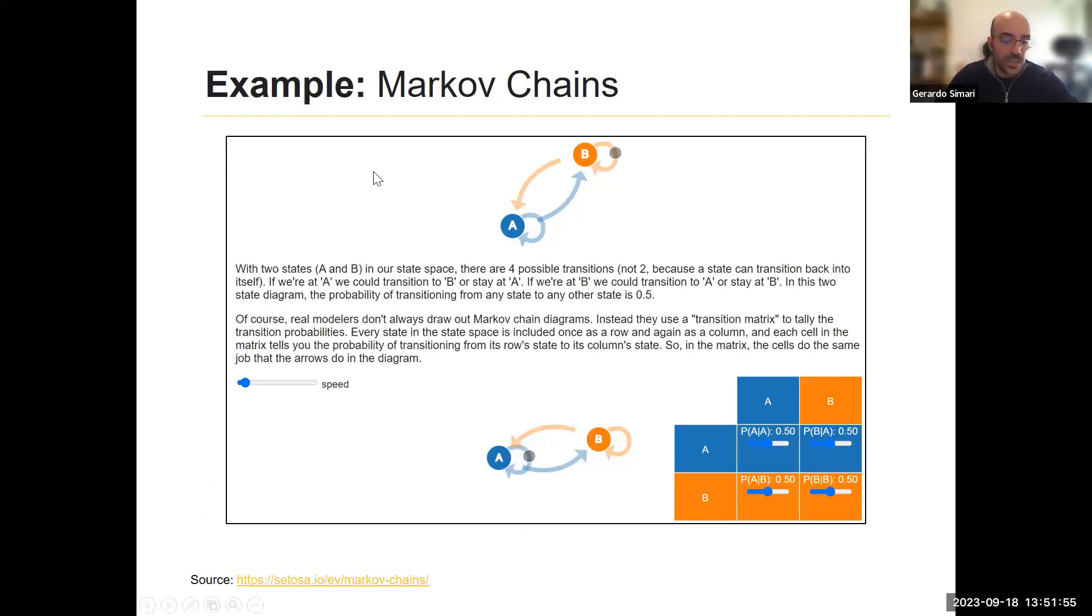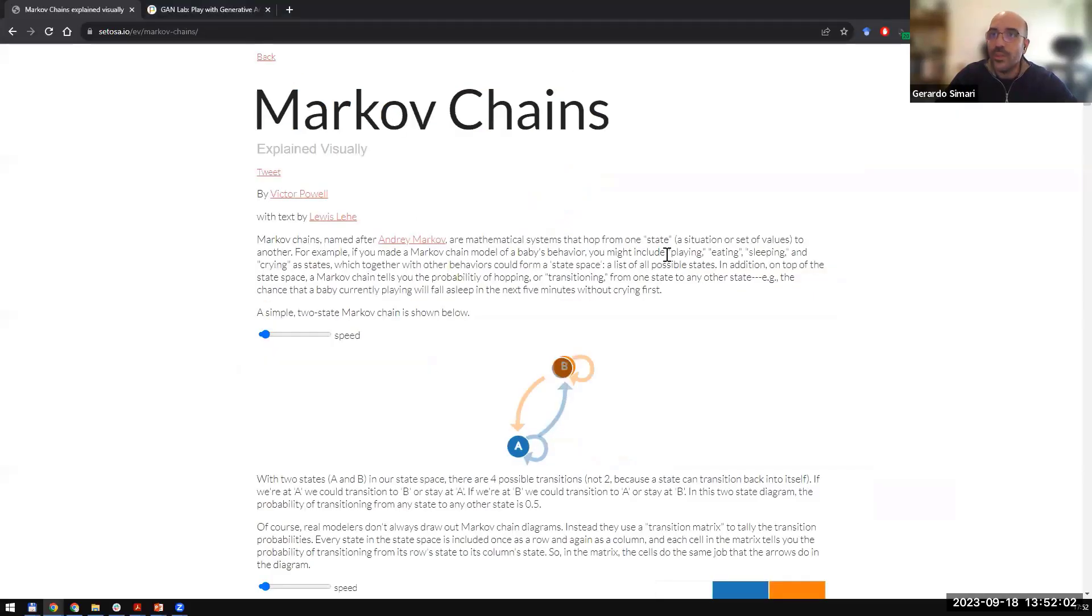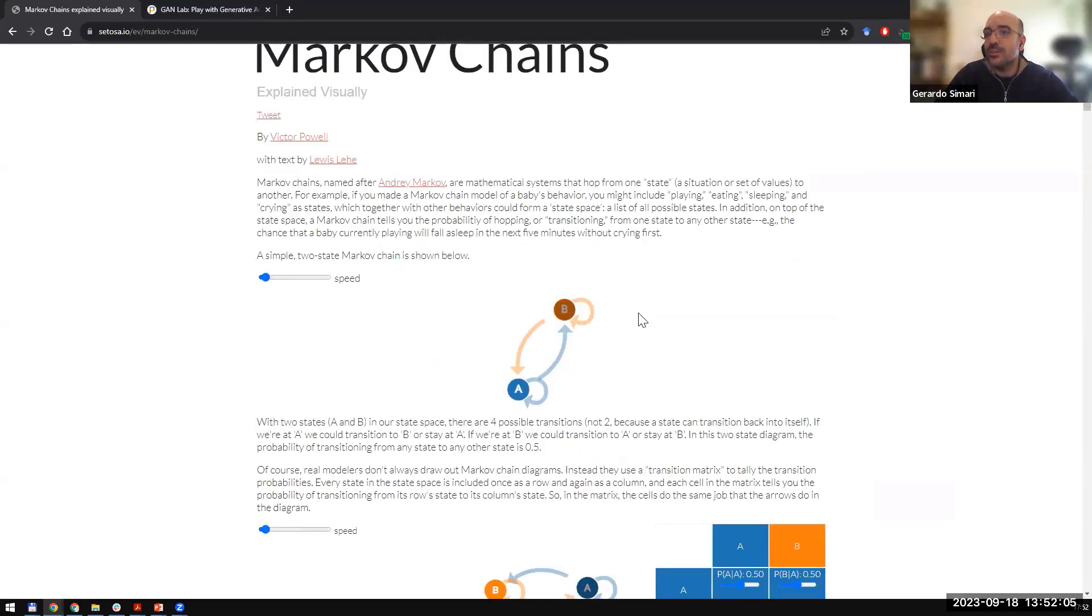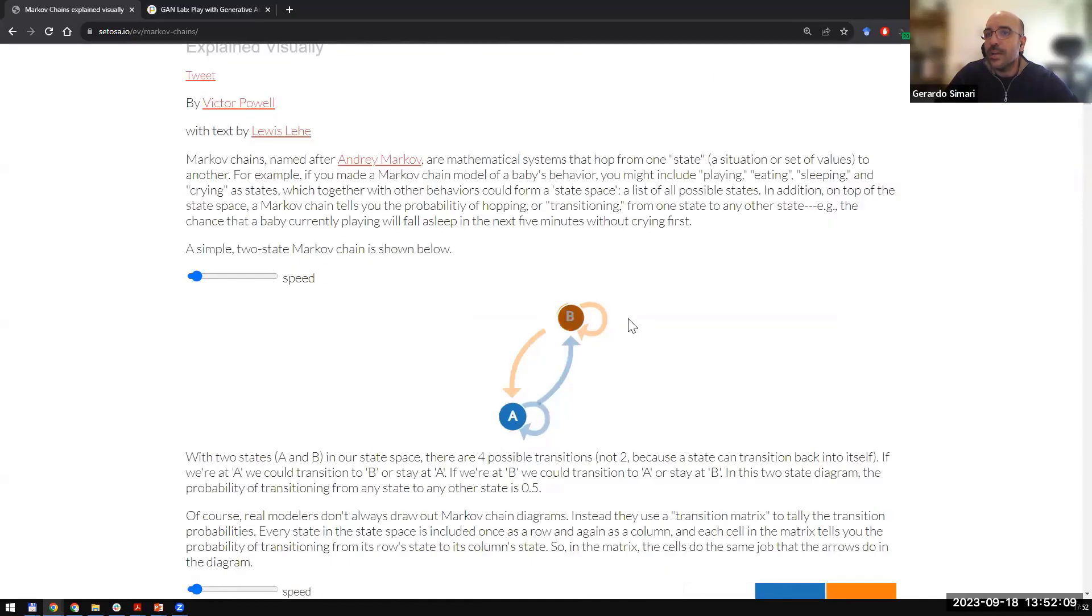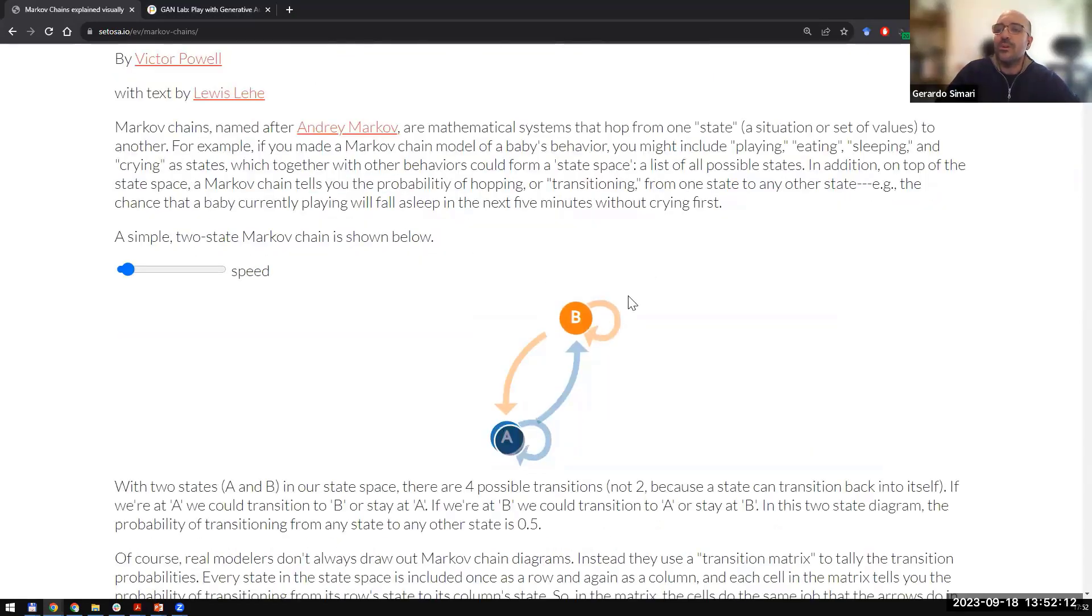There are two pretty well-known examples that we'll be illustrating here. The first one is Markov chains. I have in another window here an illustration of this in a dynamic example. Markov chains are essentially sequences of random variables that describe some sort of dynamic process. In this case, you can move the speed here, you can make it faster or slower, but you can see that the system is going between two states.